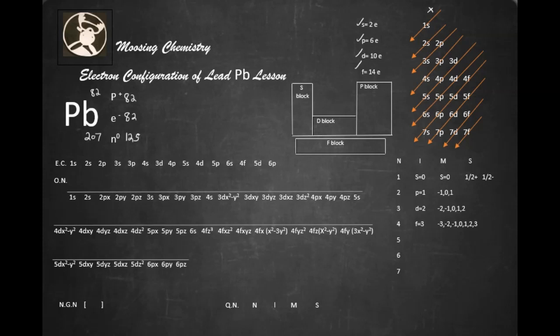How many electrons we got to use? 82. So we got 1s2, 2s2, 2p6, 3s2, 3p6, 4s2, 3d10, 4p6.